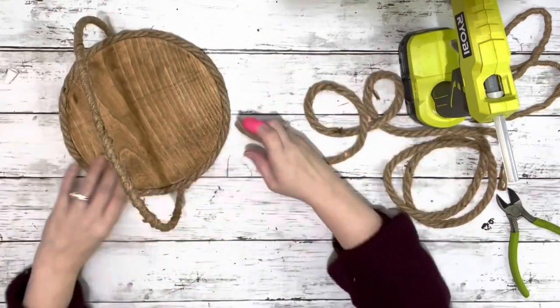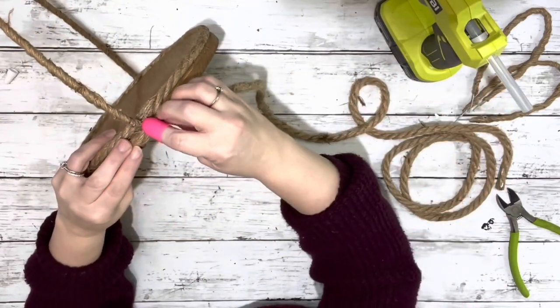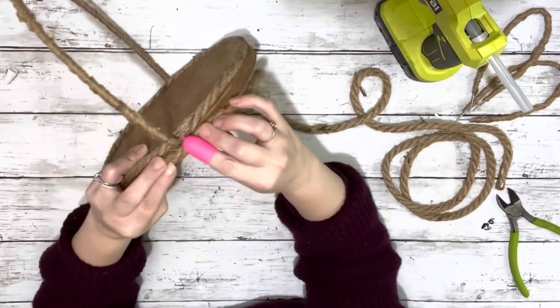Then I took the rest of that rope and hot glued it to the bottom of the plaque, which is underneath where I had placed the ring in the side.